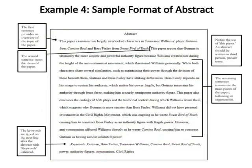Example four: sample format of an abstract in the humanities field, in which key parts are given. The first sentence provides an overview of the topic of the paper. The second sentence states the thesis of the paper. It is important to notice the use of 'this paper' — the abstract should be written in third person present tense. The remaining sentences summarize the main points of the paper following its organization.